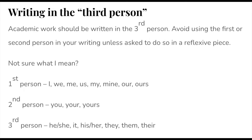Number seven: you should generally be writing your work in the third person. Academic work shouldn't be written in the first person, so you don't use 'I', 'we', 'me', 'us', 'mine', 'ours' — that's personal. Remember, keep your personal opinions and views out of it.